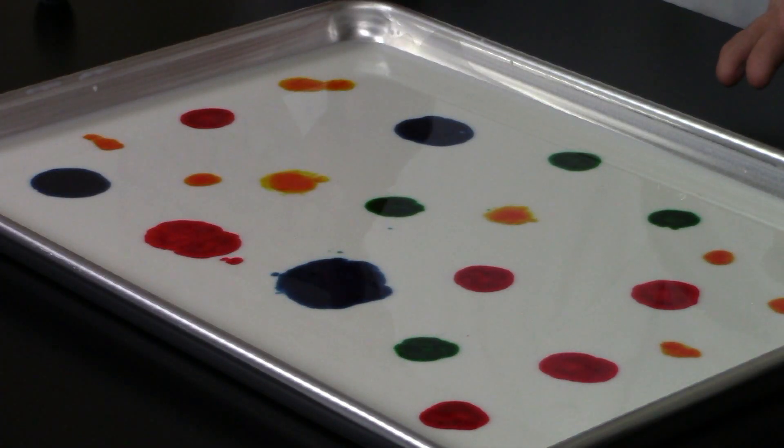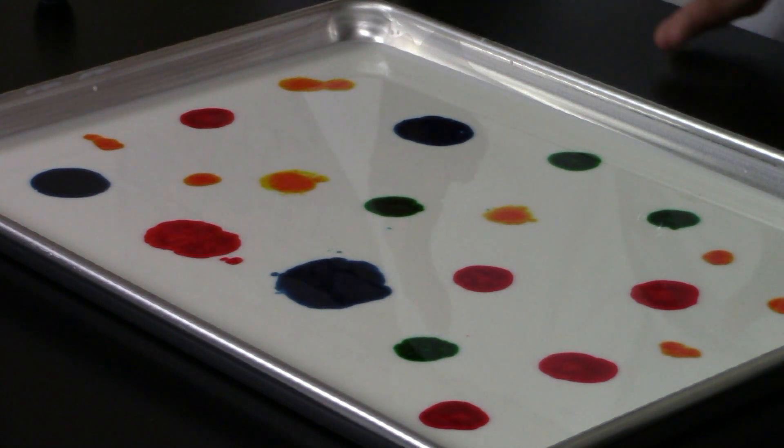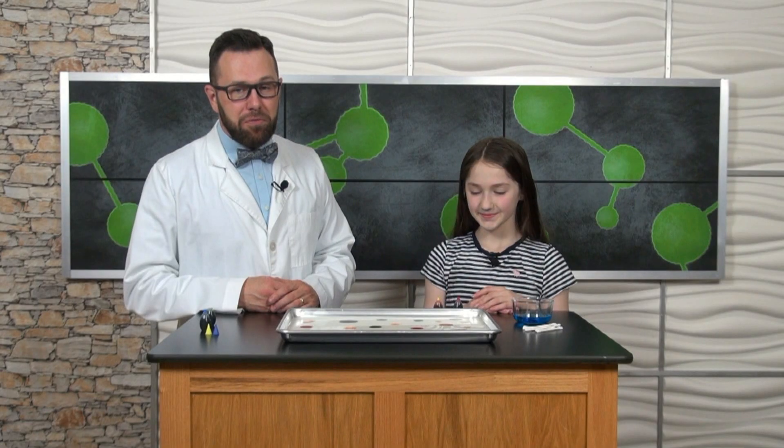Notice my pan here. Take a closer look. We filled it with milk. You'll notice different blobs of food coloring. Make sure you evenly space out the food coloring.